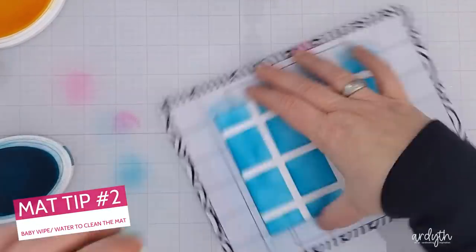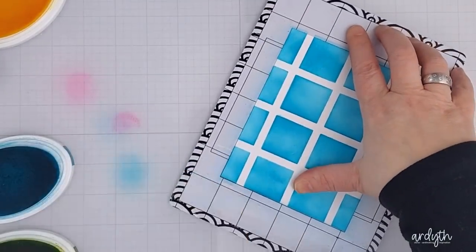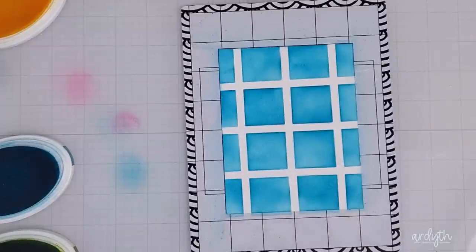To clean off the sticky mat I just used a baby wipe. You could also use water and it'll get rid of ink or paste if you do it while your paste is still wet. Once the cleaned mat has been dried it'll be sticky again.